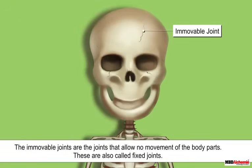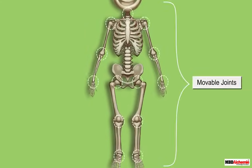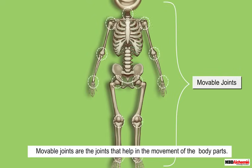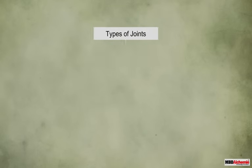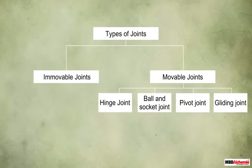The immovable joints are the joints that allow no movement of the body parts. These are also called fixed joints. Such joints are found in the skull. Except the joints present in the skull, all other joints found in the body are movable. Movable joints are the joints that help in the movement of the body parts. Movable joints are further of four different types: hinge joint, ball and socket joint, pivot joint, and gliding joint.